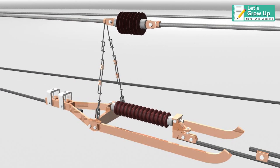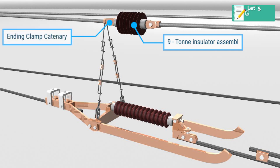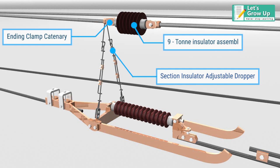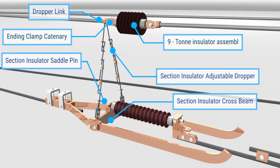Let's familiarize ourselves with some parts: nine-ton insulator assembly, ending clamp, catenary section insulator, adjustable dropper, section insulator saddle pin, dropper link, section insulator cross beam, and section insulator runner.